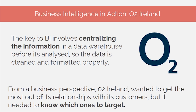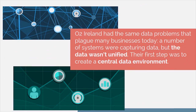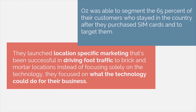From a business perspective, O2 Ireland wanted to get the most out of its relationship with its customers, but it needed to know which ones to target. O2 Ireland had the same data problem that plagued many businesses today — a number of systems were capturing data, but the data wasn't unified. The first step was to create a central data environment. O2 was able to segment the 65% of their customers who stayed in the country after they purchased SIM cards and to target them. They launched location-specific marketing that's been successful in driving foot traffic to brick and mortar locations. Instead of focusing solely on the technology, they focused on what the technology could do for their business.